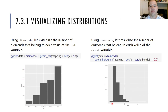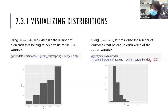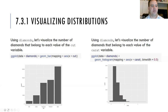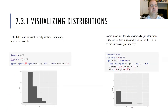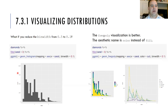We also looked at one continuous variable, which was carat. We had to use bin width to break that continuous variable into bins and make it act like a categorical variable. We used filtering so we could look at just what we wanted in the dataset. We looked at zooming in using xlim and ylim. We also looked at changing the bin width on histograms and saw how the bars popped up and were skinnier.